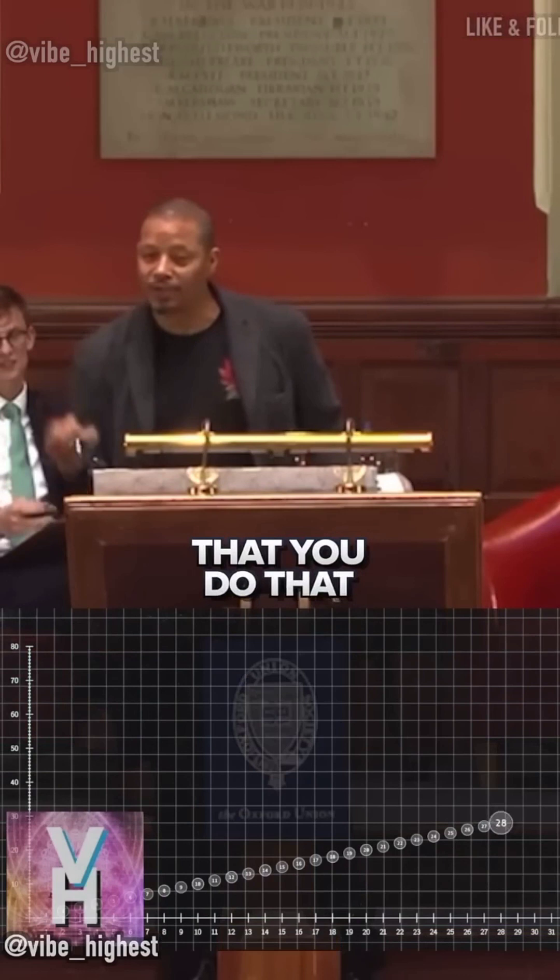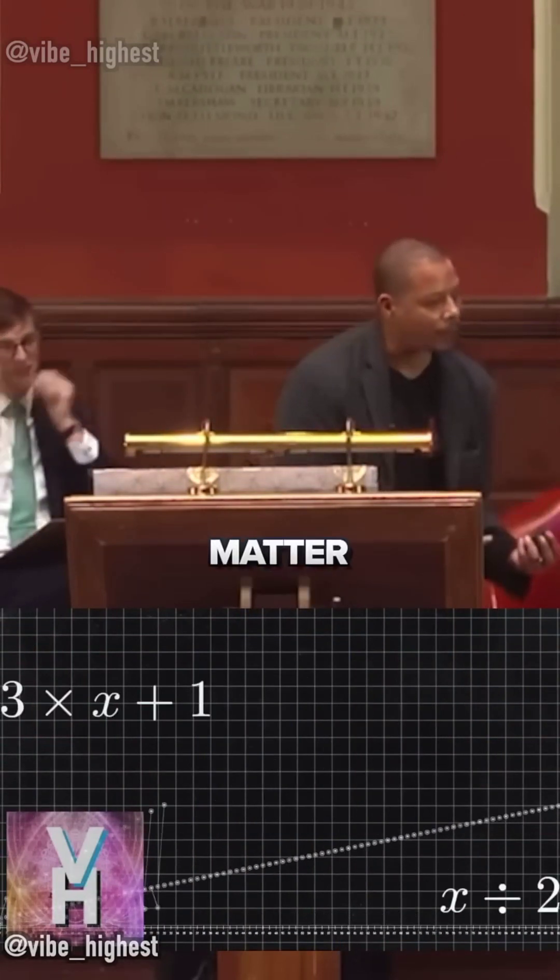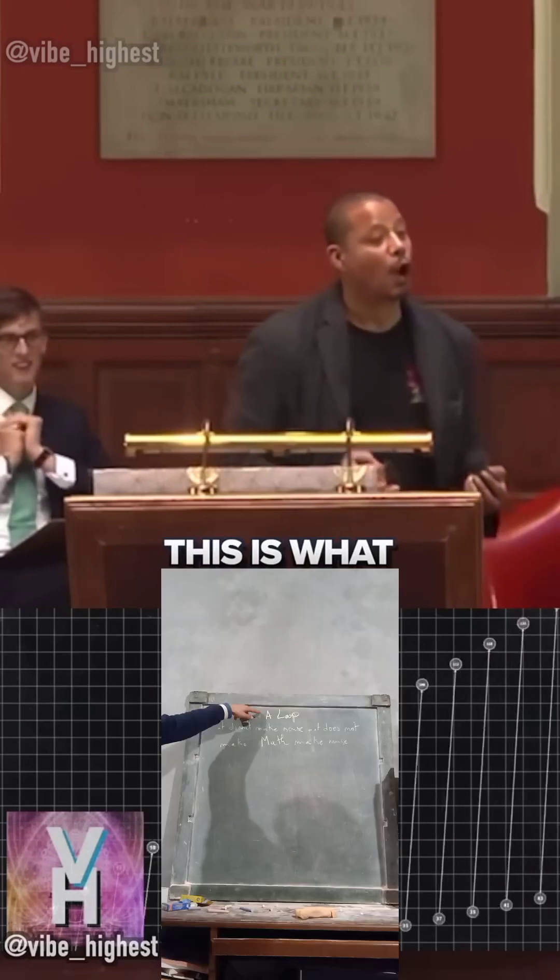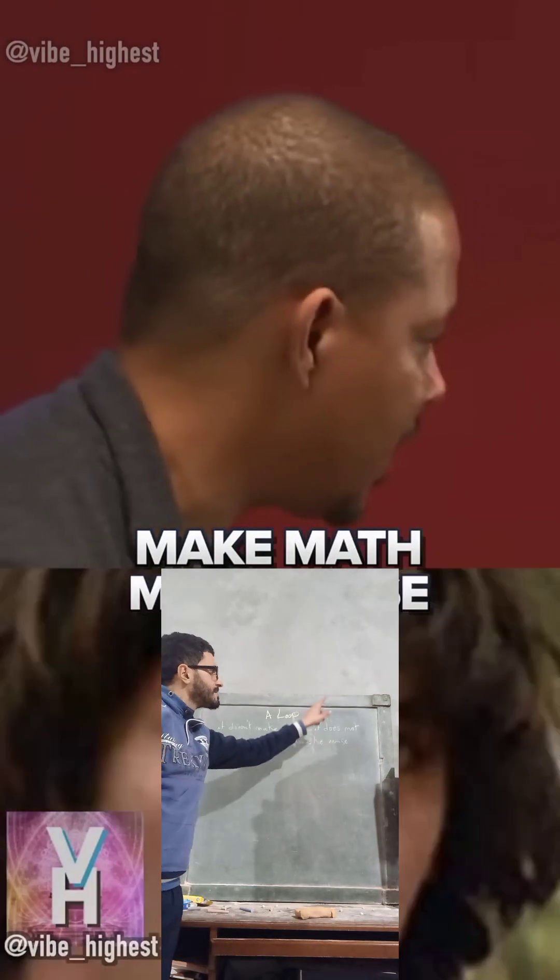Any number below 2 that you do that same operation with, it will go into an exponentially small number. This is what we call a loop. It doesn't make sense and it does not make math make sense.